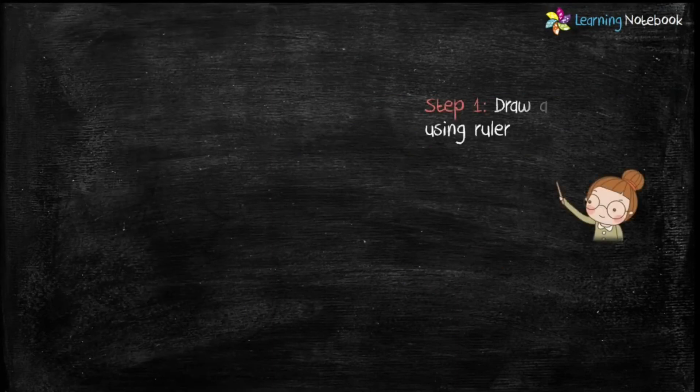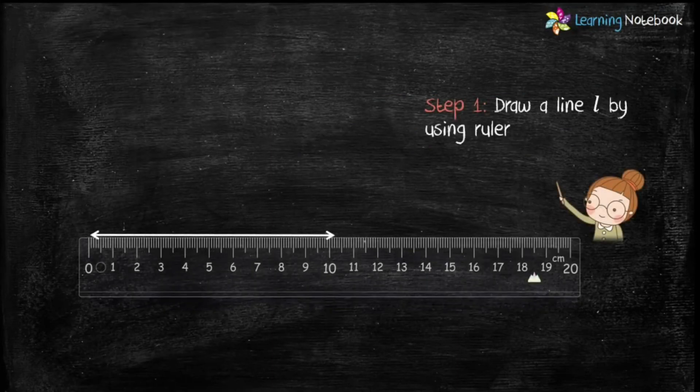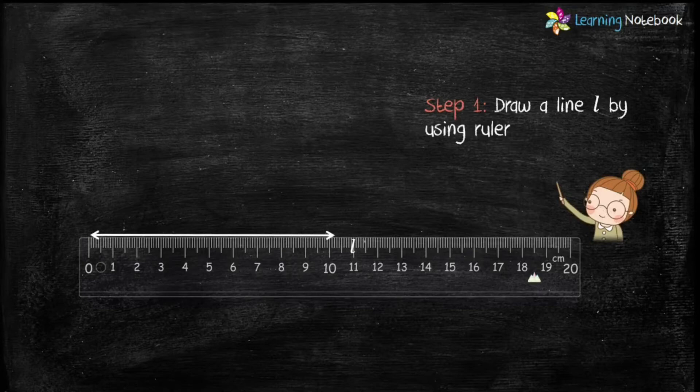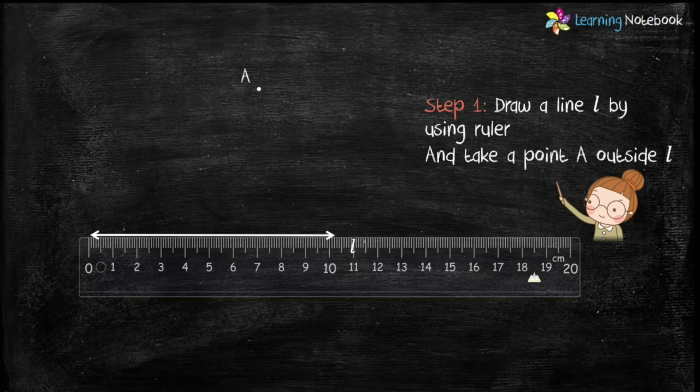Now, let's start the construction. Step 1: Draw a line L with the help of a ruler and then take a point A outside this line L.